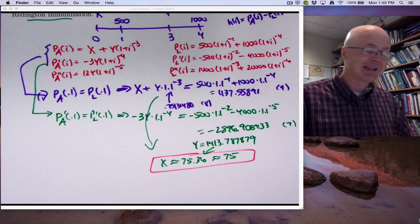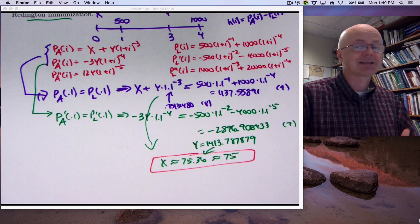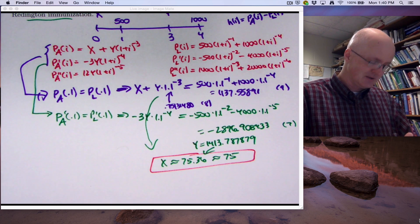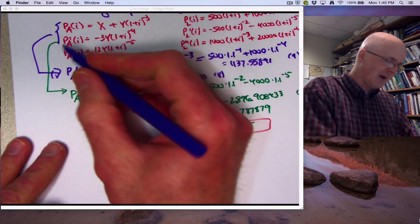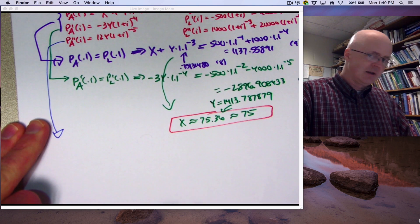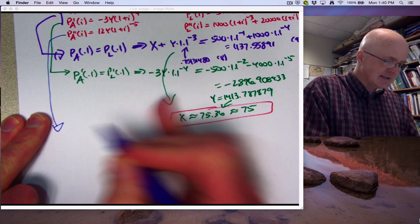It's one of the five answers, but it occurs in more than one place. It occurs in one spot where it said it is Reddington immunized, and it occurs in another spot where it says it's not Reddington immunized. So you can't just solve for x. Part of the point of the problem is to think about Reddington immunization.